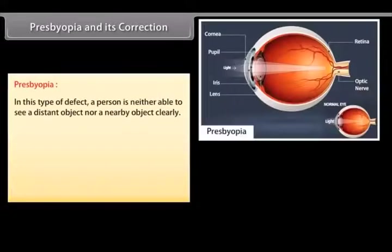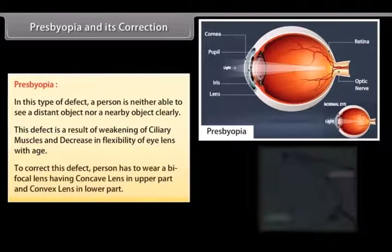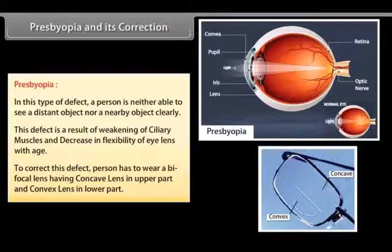Presbyopia and its correction: In this type of defect, a person is neither able to see a distant object nor a nearby object clearly. This defect is a result of weakening of ciliary muscles and a decrease in flexibility of the eye lens with age. A person has to wear a bifocal lens having a concave lens in the upper part and a convex lens in the lower part.